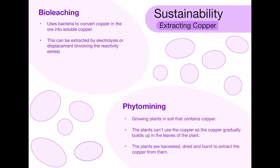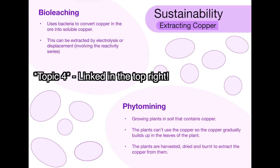An important example of sustainability is extracting copper. Taken straight from the specifications and textbooks, there are two methods: bio-leaching and phytomining. Note that foundation combined students do not need this, but everyone else it is important. Bio-leaching uses bacteria to convert copper in the ore into soluble copper — the bacteria is left onto the ore and makes it soluble, meaning the copper can then be extracted by electrolysis or displacement.